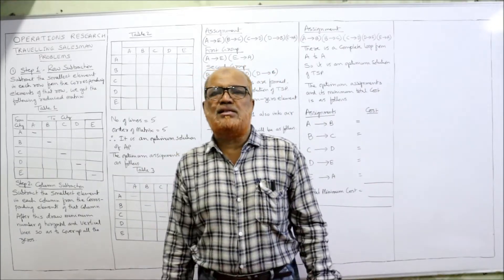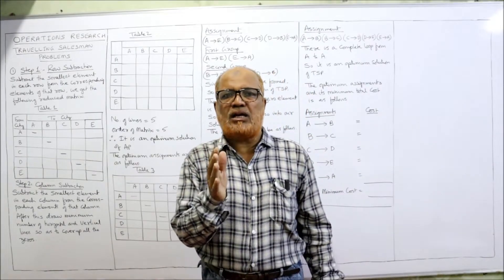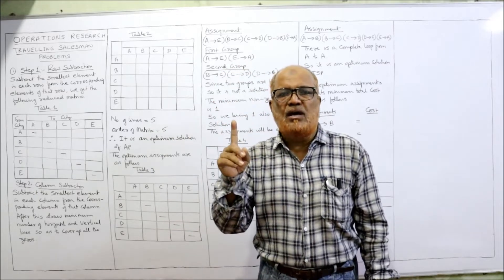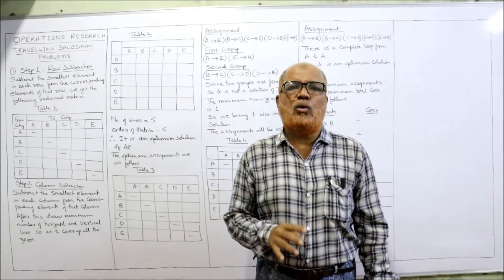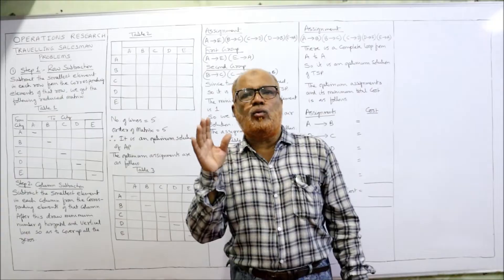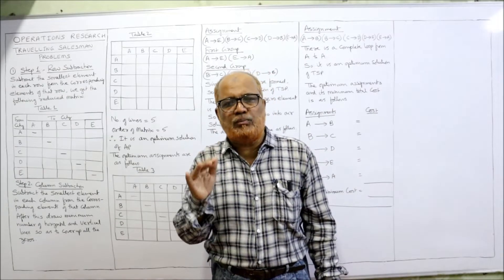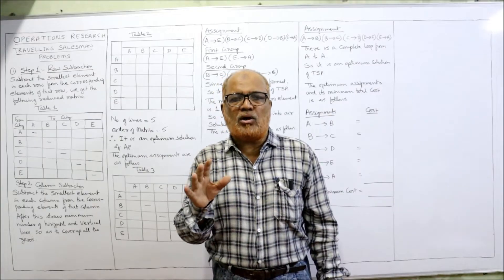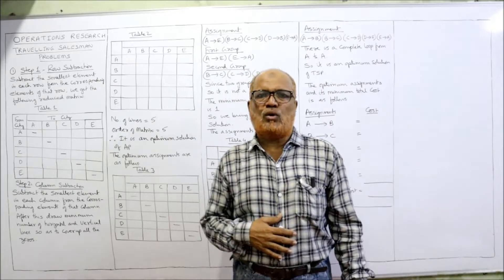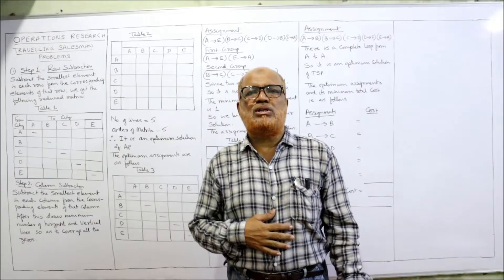The Traveling Salesman Problem is a problem where a salesman starts from a particular city, visits each other city only once, and then comes back to the home city. The question is: what is the path, what is the sequence he has to follow in order to visit all other cities, so that the total distance traveled is minimum, or total cost is minimum, or total time is minimum.